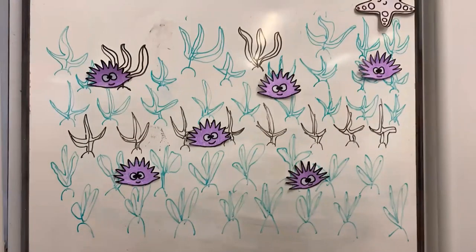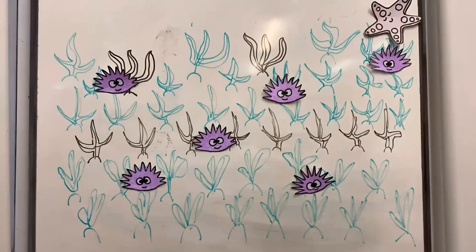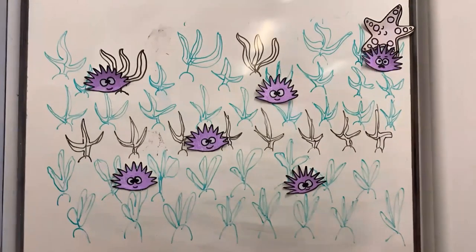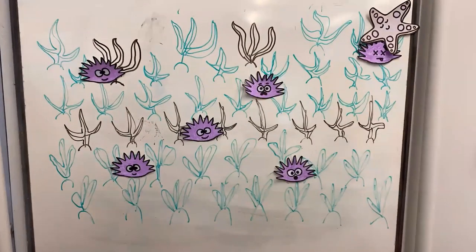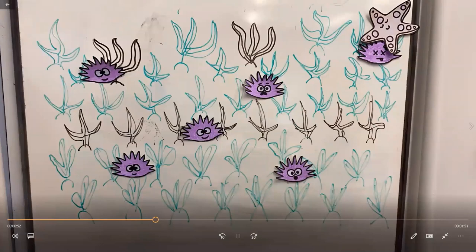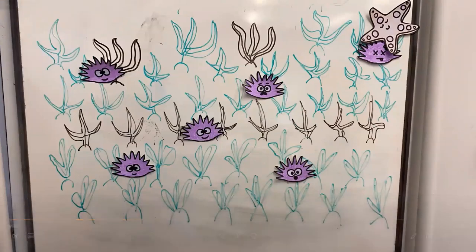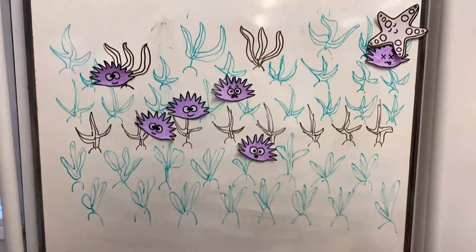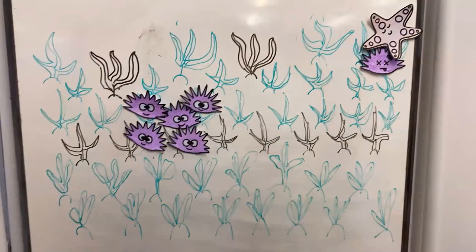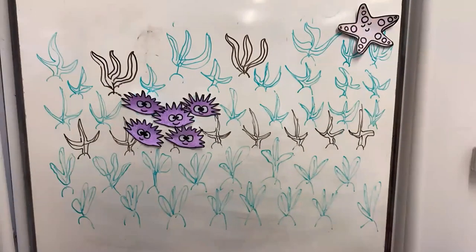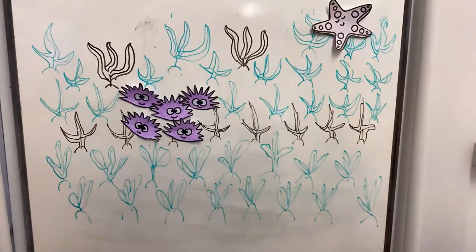The addition of a starfish leads to the predation of sea urchins. Sea urchins try to avoid predation and form aggregations which act as refuge from the starfish. These aggregations of sea urchins move around due to starfish predation, causing overgrazing of sea urchins in particular areas of the kelp bed.